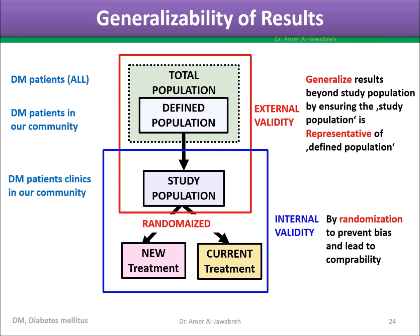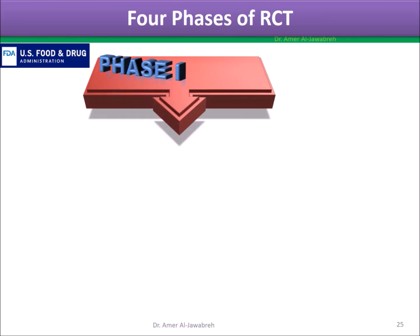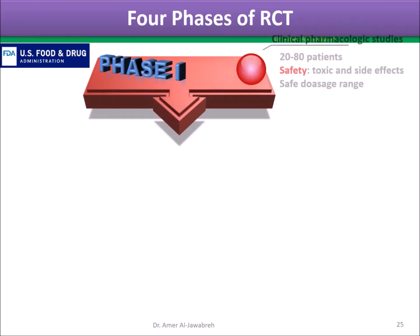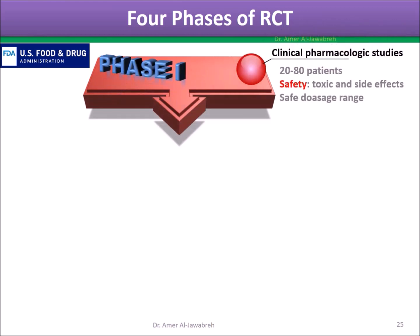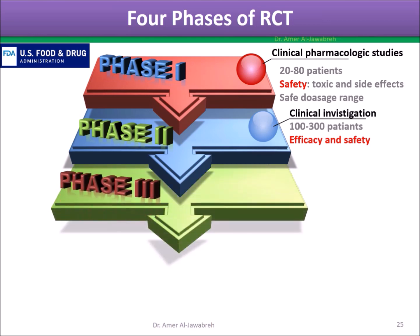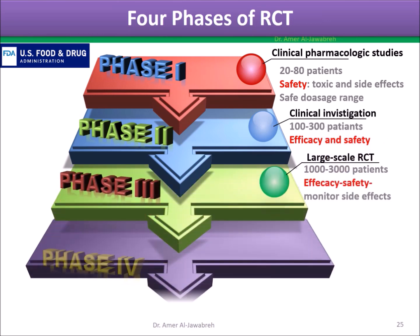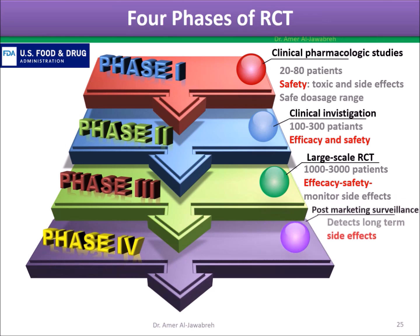Internal validity prevents bias and leads to comparability. The four phases of RCT: Phase 1 — clinical pharmacologic studies, for safety. Phase 2 — clinical investigation, for efficacy and safety. Phase 3 — large-scale RCT, for efficacy and safety. Phase 4 — post-marketing surveillance, for long-term side effects.